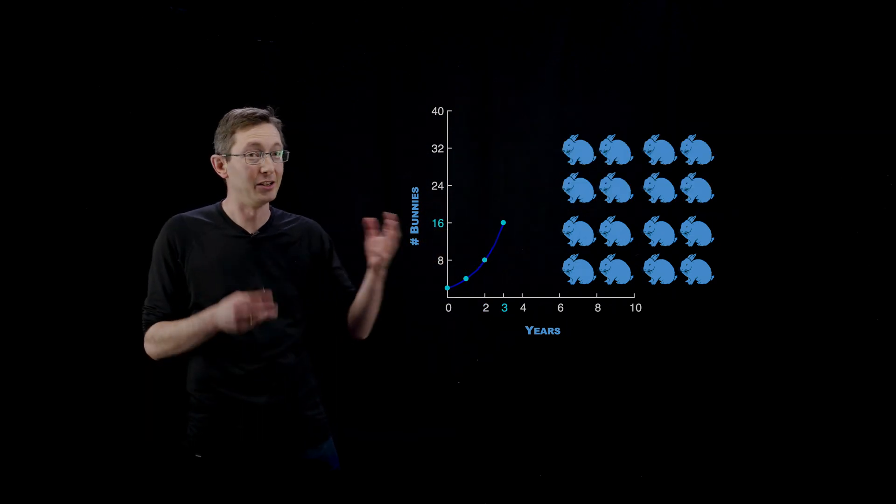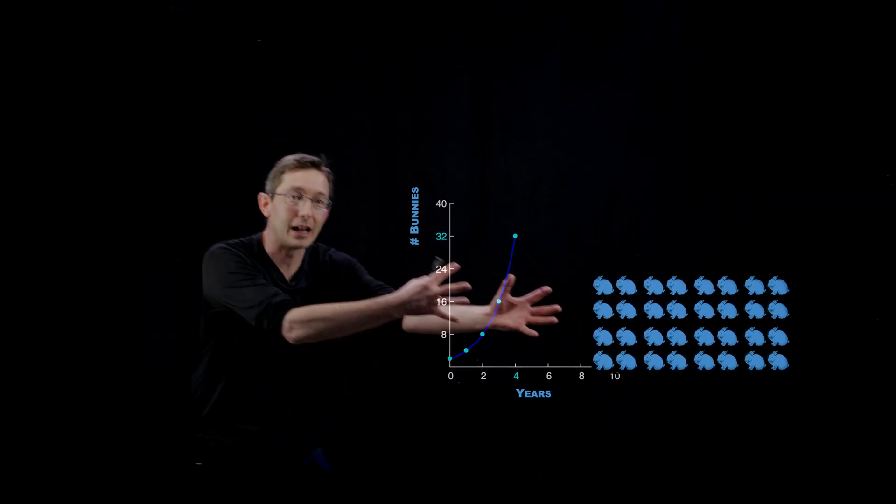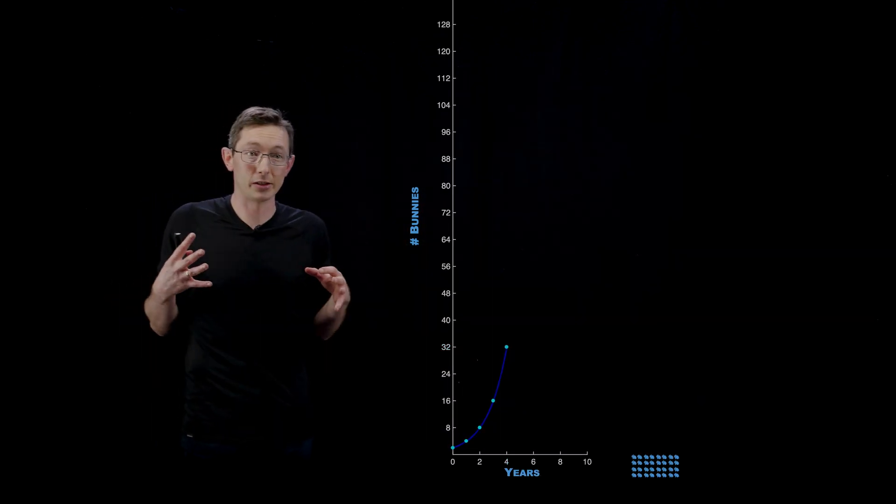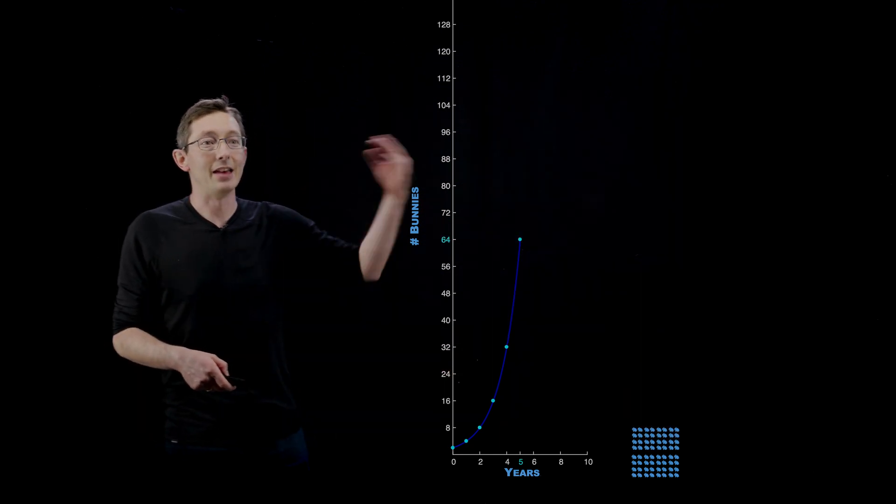After three years I have 16. You can see this is getting bigger. Four years I have 32 bunnies. And very quickly I have to zoom out because this is growing so fast. So I have 32 bunnies now after four years. Then I have 64,